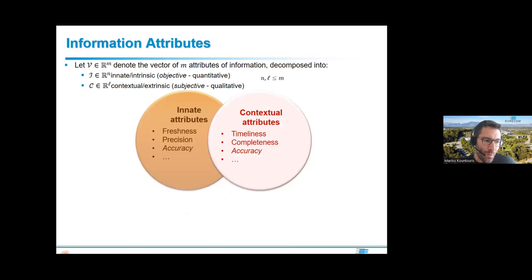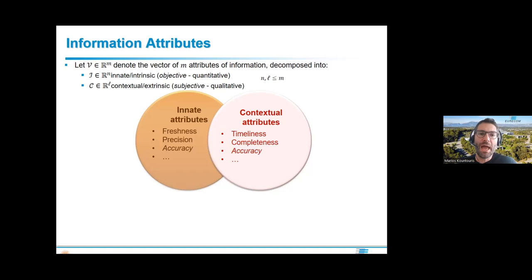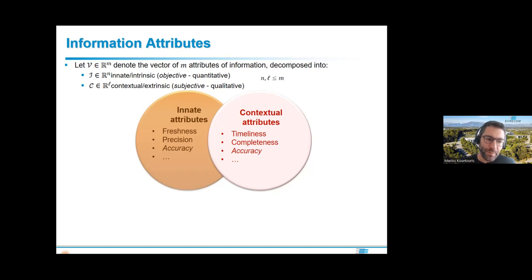What we can do today is use metrics inspired by the emerging field of Age of Information. We can say information has attributes — some intrinsic objective ones like freshness (when generated vs. when received), precision of measurement, and accuracy. There are also contextual attributes: information sampled now might arrive after network congestion and processing delays, and whether it arrives at the right time to make a decision defines timeliness. For example, if a 'brake' message arrives within a critical window, it has value; if it arrives late, it may cause a catastrophic event.